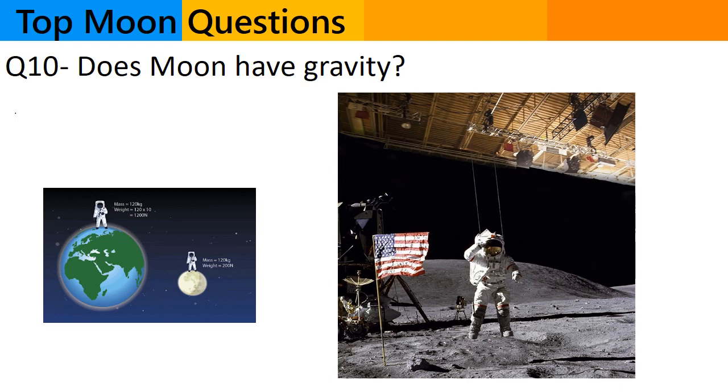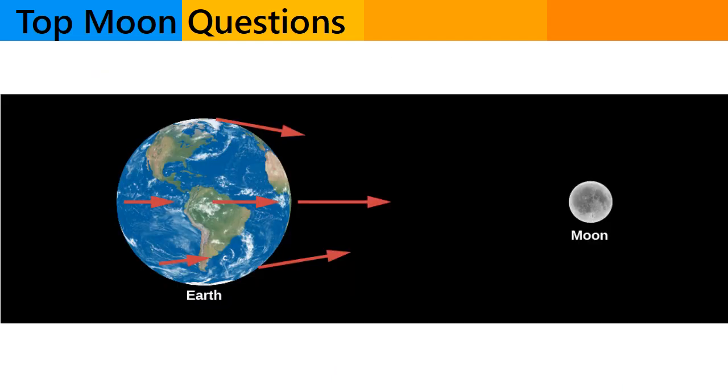On the moon, you would be able to jump about six times as high as you can on earth, but you would still come back down. The moon's gravity is what keeps it in orbit around the earth and also affects the tides on our planet.